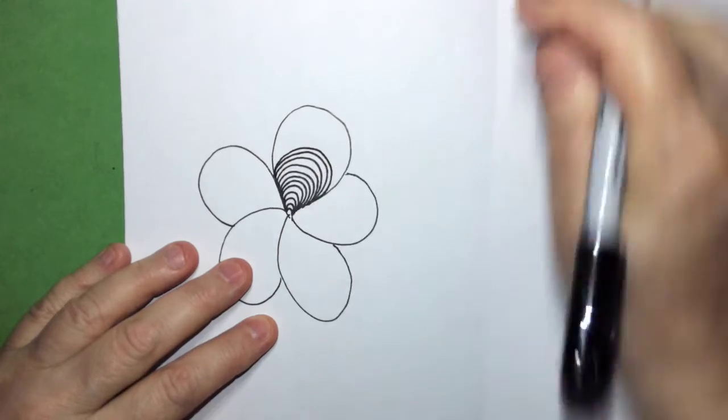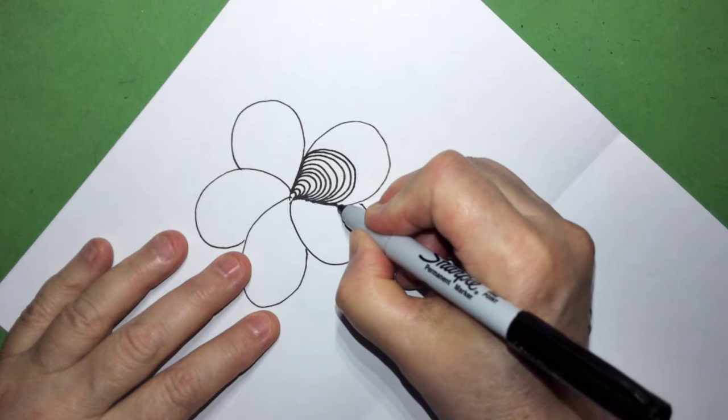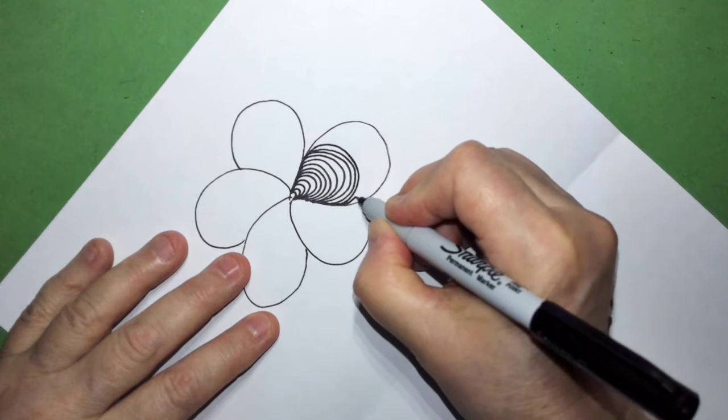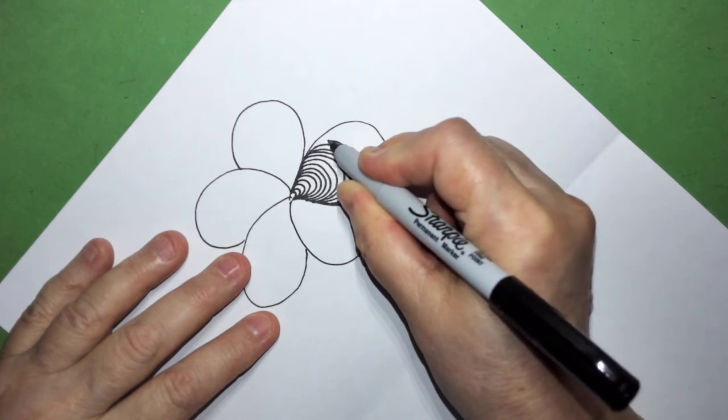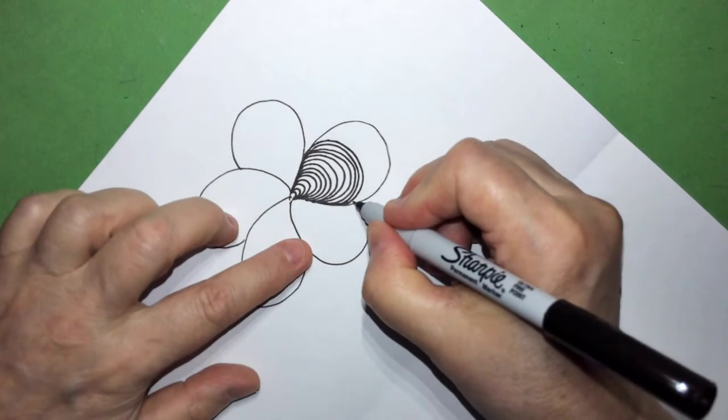And that goes right up to here. I'm going to turn this so it's more comfortable for me. You start out right here and then go around. Take your time, I'm going a little bit too fast. You want to be a little more precise. You keep doing that until you get to the end.